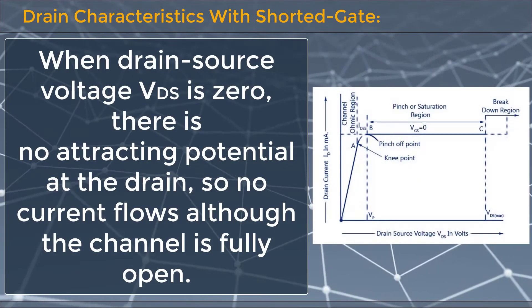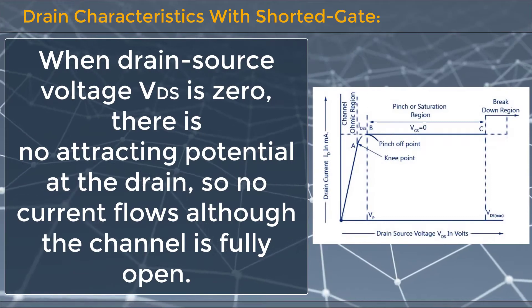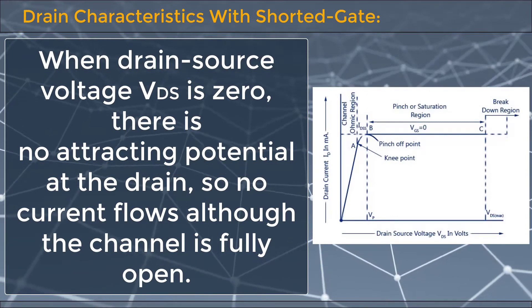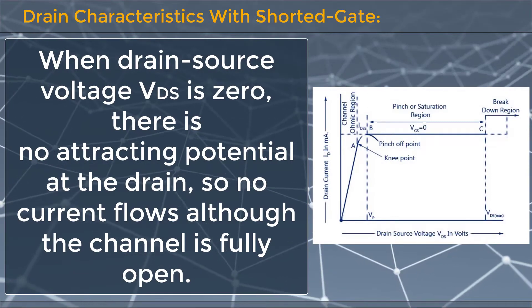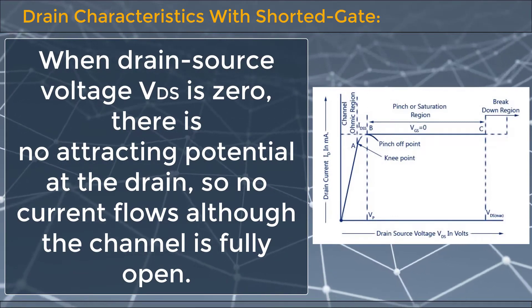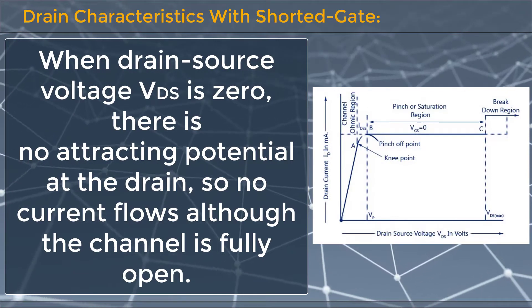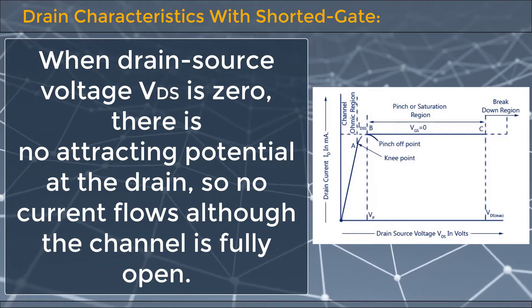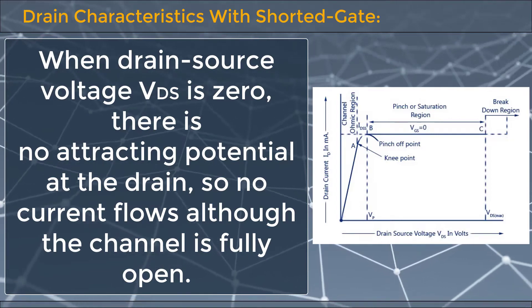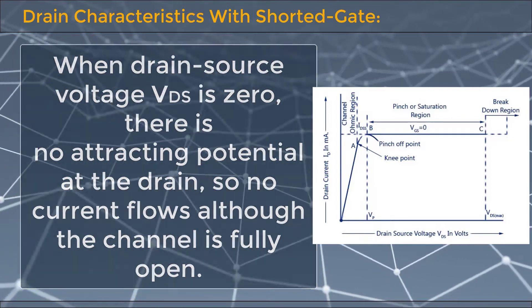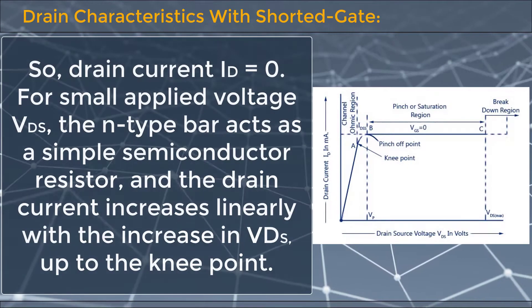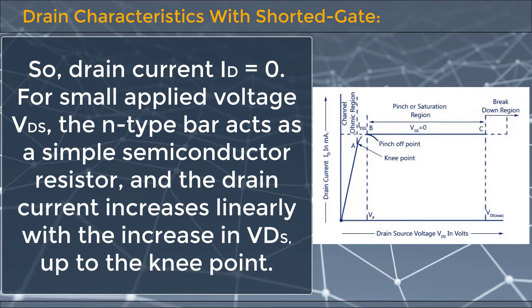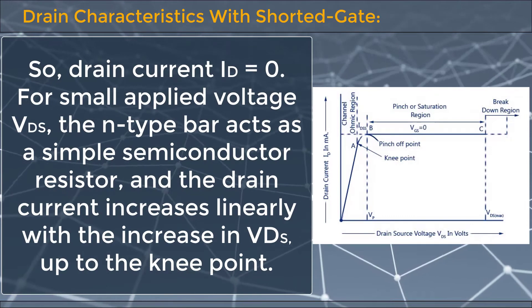When drain source voltage VDS is zero, there is no attracting potential at the drain, so no current flows through the channel — the channel is fully open. Therefore, drain current ID is equal to zero.